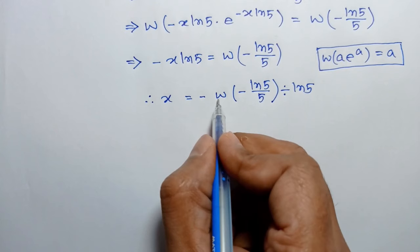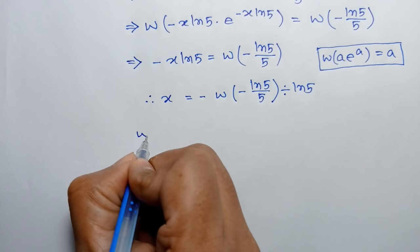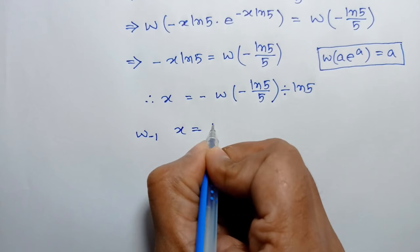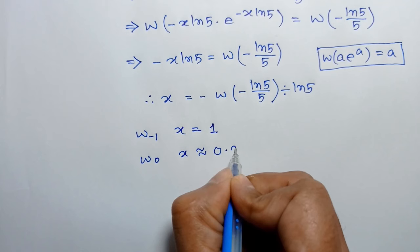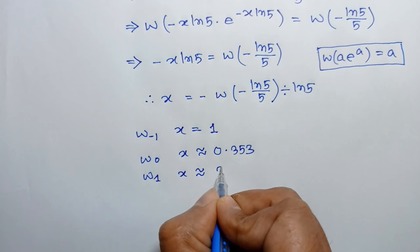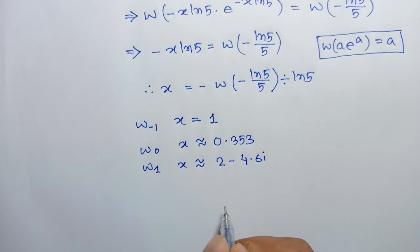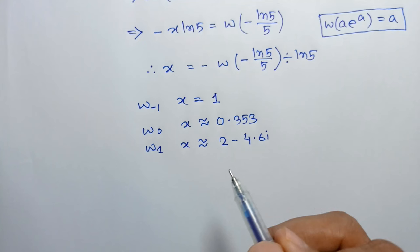Since the Lambert W function is a multi-valued function, the branch index of W can be any integer. For W of branch 0, x equals 1. For W of branch negative 1, the approximate value of x is 0.353. For W of branch 1, the approximate value of x is 2 minus 4.6i, which is complex. Higher branches also yield complex numbers. So there are two real solutions and infinitely many complex solutions.